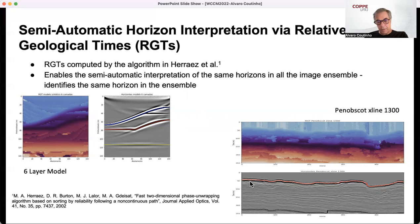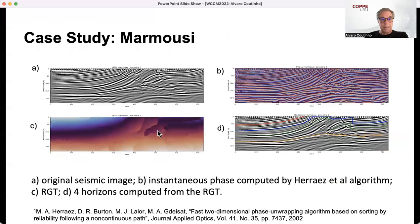Here you look at how the algorithm is capable of doing this. This is RGT. This is a horizon. The interpreter picks up a point and that will generate the horizon. It's important for the RGT that you identify the same horizon in all our ensemble of images. In the case study with the Marmousi we're using here, you can see here the original seismic images. This is the instantaneous phase computed by the RGT algorithm. This is the RGT. And then four horizons computed from the RGTs.